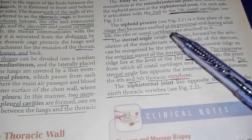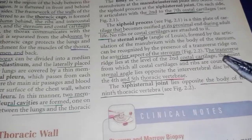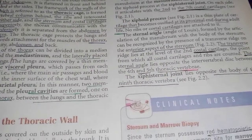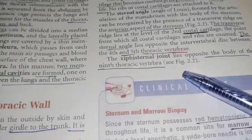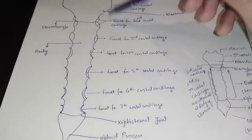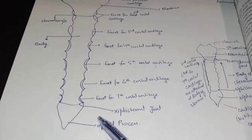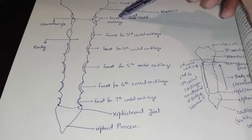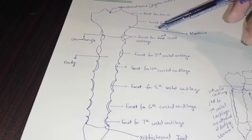The sternal angle is opposite to the intervertebral disc between the 4th and 5th thoracic vertebrae. This is important for surface anatomy — counting of ribs starts from here. The xiphisternal joint is opposite to the 9th thoracic vertebra. So remember: sternal angle is opposite to the disc between T4 and T5, and the xiphisternal joint is opposite to T9.